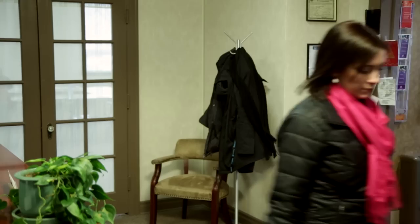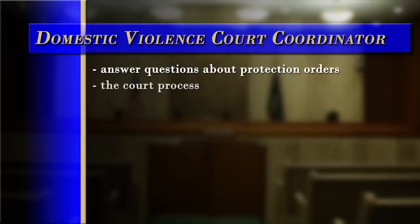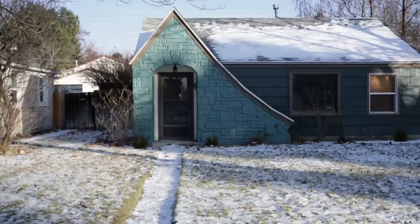Many counties have an advocate to assist persons seeking a protection order. An advocate is a person who works for the county or a domestic violence shelter and will assist you through the process free of cost. Though the advocate is not an attorney and cannot provide legal advice, they can be a very important resource. The advocate can assist you in filling out your petition, guide you in preparation for the hearings, and provide needed emotional support throughout the process. A domestic violence court coordinator in your area can also answer questions about protection orders, the court process, and resources available in the community.